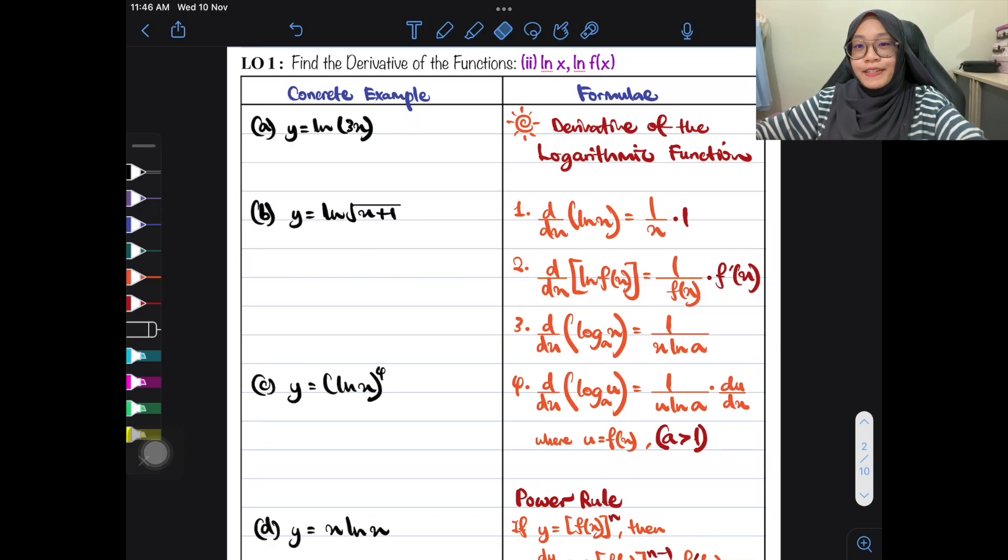Hello everyone, Assalamualaikum. So here is the derivative of logarithmic functions. So the first formula here, we have differentiate ln x. Differentiate ln x is just 1 over x. Where is this x coming from?